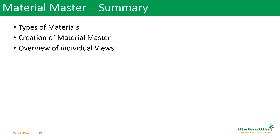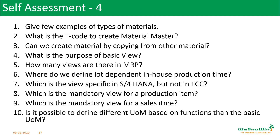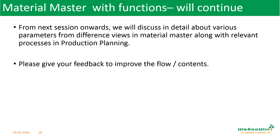In this session, we discussed the overview of different types of materials, how to create the material master, and an overview of individual views in the material master, so that we can have a broad understanding of what is in the material master. Now it is time for self-assessment. There are 10 questions — please go through them and prepare yourselves. Answers will be shared in the next session. From the next session onwards, we will go through individual parameters from different views in material master that are relevant for production planning, discussing their detailed functions. For example, for MRP type, I will discuss all the different types of MRP types and other things, so participants can link that field with the function immediately.